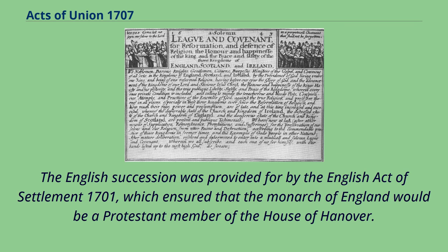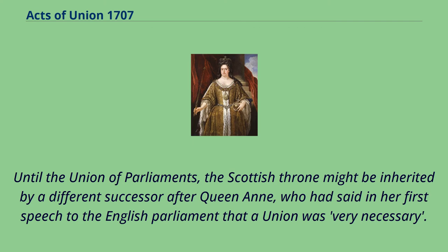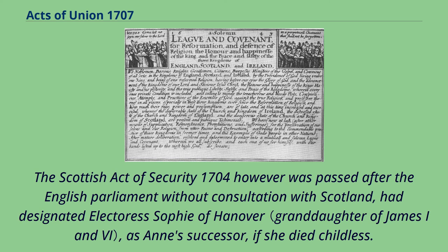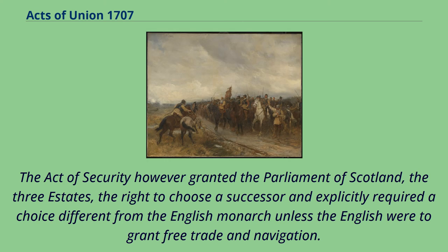The English succession was provided for by the English Act of Settlement 1701, which ensured that the monarch of England would be a Protestant member of the House of Hanover. Until the Union of Parliaments, the Scottish throne might be inherited by a different successor after Queen Anne, who had said in her first speech to the English Parliament that a union was very necessary. The Scottish Act of Security 1704 was passed after the English Parliament, without consultation with Scotland, had designated Electress Sophia of Hanover as Anne's successor if she died childless. The Act of Security granted the Parliament of Scotland the right to choose a successor, and explicitly required a choice different from the English monarch unless the English were to grant free trade and navigation.